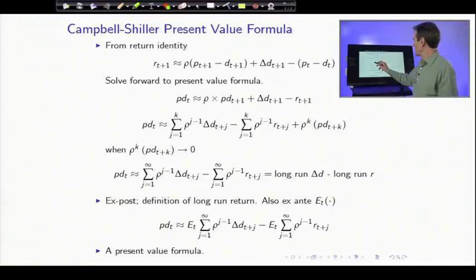So what do we get now? Price dividend ratio today, sum of rho to the J minus 1, future dividend growth, future returns, and K. I just did it K times forwards.